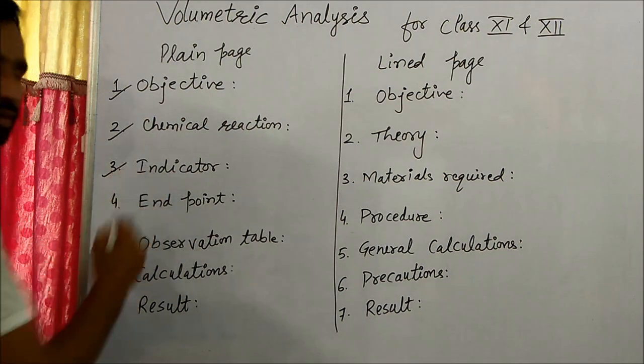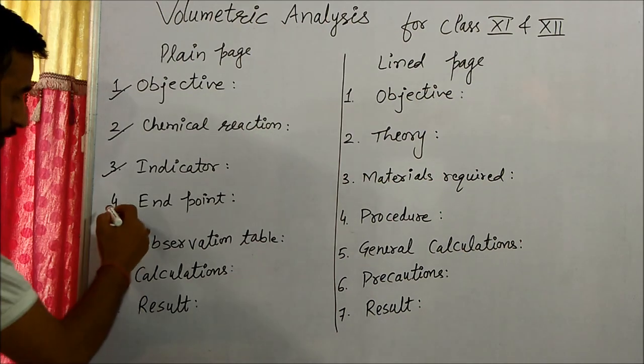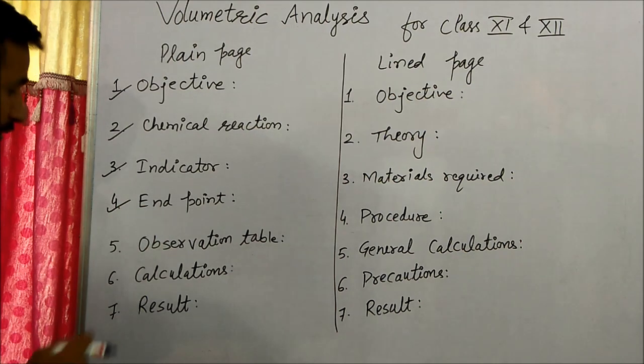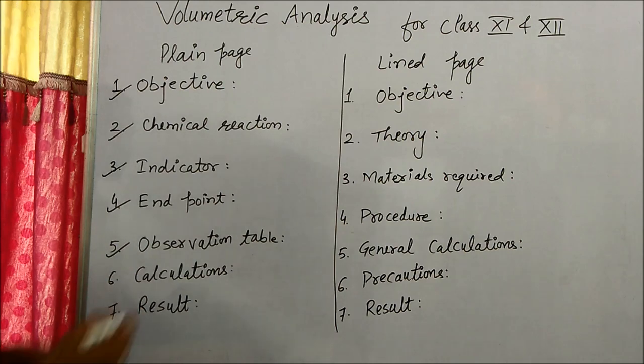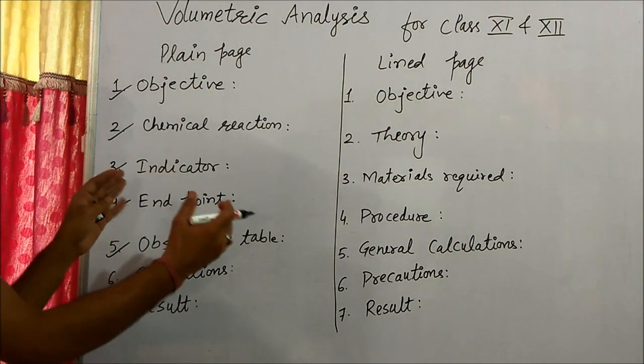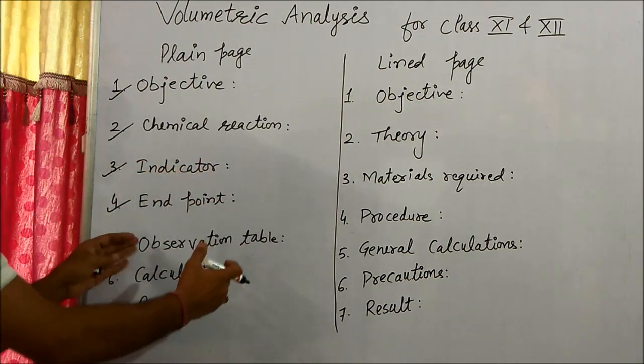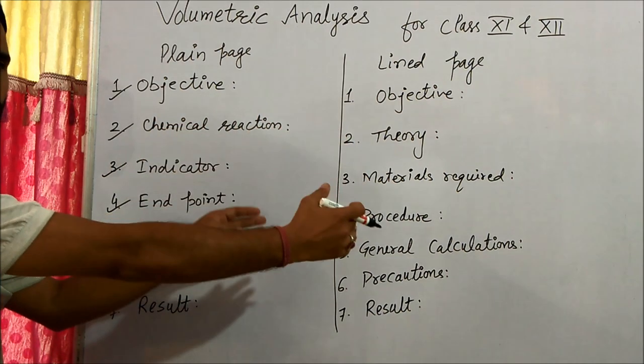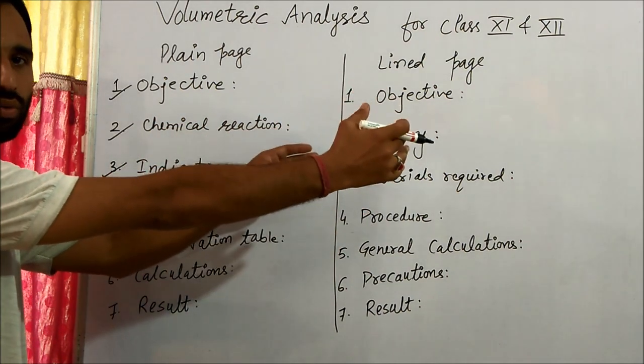Observation table. In the observation table, it is given in the book: initial volume used, final volume used, initial reading.